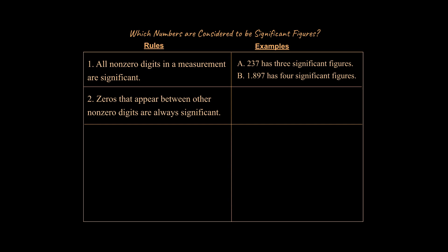Zeros that appear between other non-zero digits are always significant. So think about what this means for a moment. And so if you have these two examples over here you can see those zeros are in between significant digits and so they are always significant.